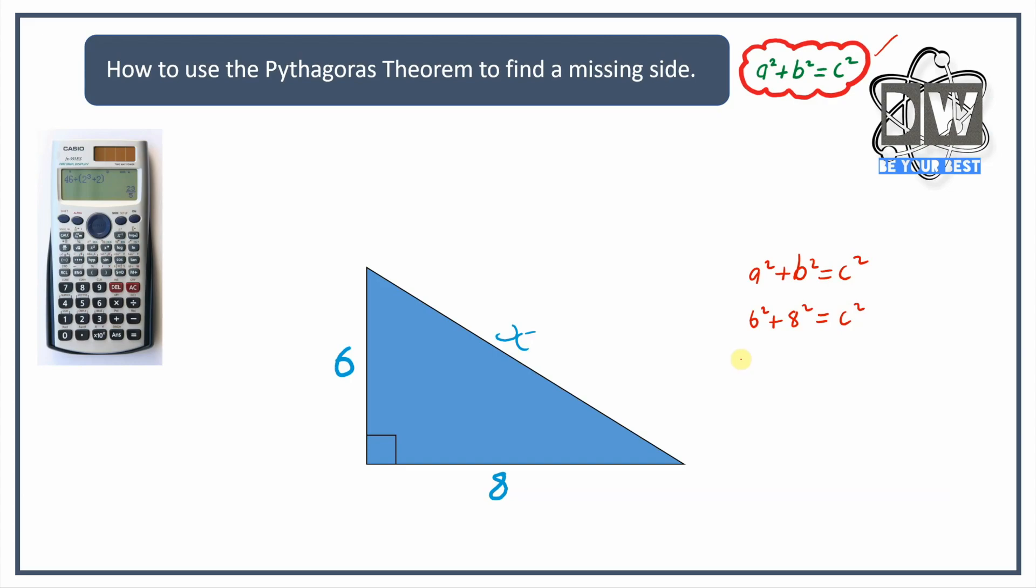Six times six equals 36 plus eight times eight, which is 64, and we don't know what c squared is. Add together: 64 add 36 gives us 100, and that equals c squared. We square root and square root. The square root of 100 is 10 equals c, and we can replace that c for the x because we're looking for x. X equals 10.